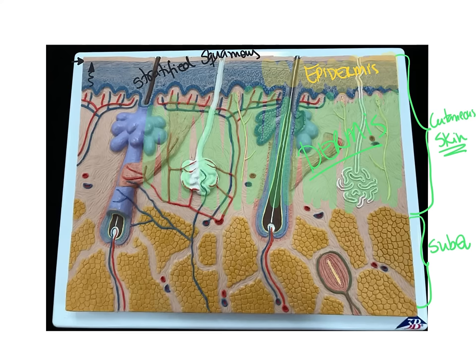Dermal papillae are very important because without them, if the interface between epidermis and dermis were flat, friction could easily cause those two layers to split apart. The dermal papillae cause the epidermis and dermis to interlock, so they do not split apart under normal friction. However, with excessive friction, they can separate, and accumulation of interstitial fluid between the epidermis and dermis is what you know as a blister.